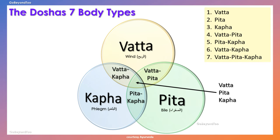With this overlap, we end up with an overlap between vata and pitta, pitta and kapha, and between vata and kapha. And there is a seventh overlap where all three meet in the same place. Therefore the seven body types are: vata, pitta, kapha, vata-pitta, pitta-kapha, vata-kapha, and vata-pitta-kapha.